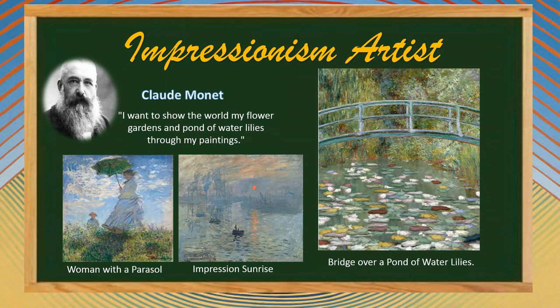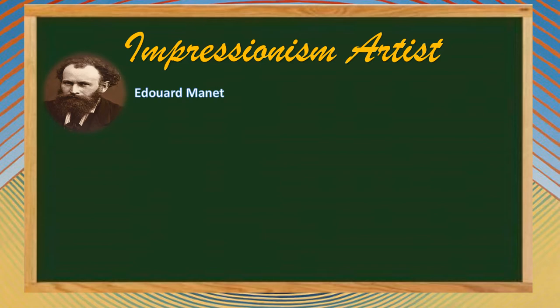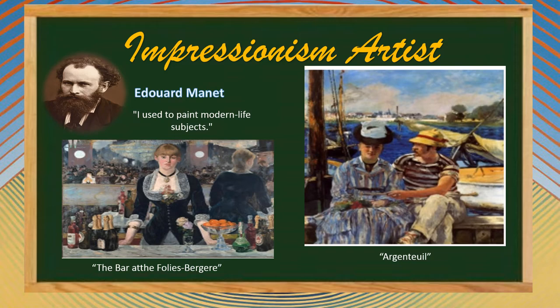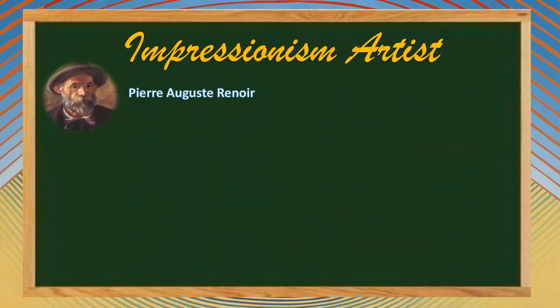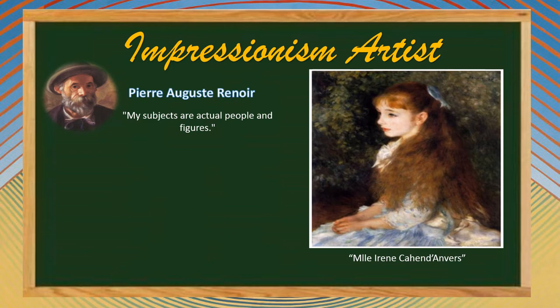Next we have Édouard Manet, a French painter who broke new ground by defying traditional techniques of representation and choosing subjects from events of his own time. He is famous for depicting modern life subjects such as The Argenteuil and The Bar at the Folies-Bergère. Third, Auguste Renoir was a French painter associated with Impressionism, known for snapshot-like scenes full of sparkling colors and lights. His famous artworks include The Little Irène and The Luncheon of the Boating Party.